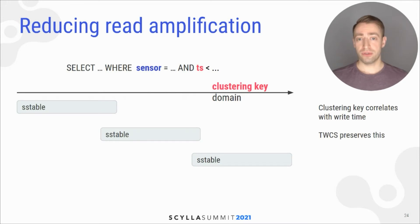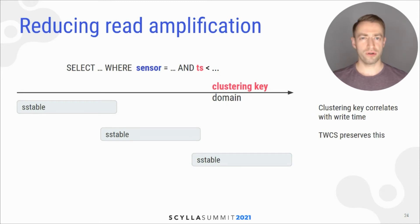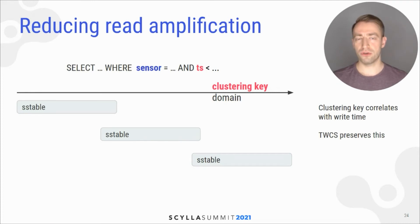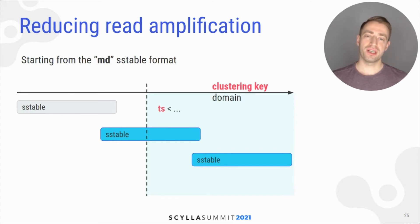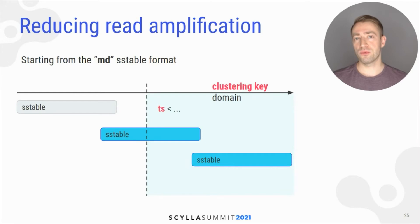But there is another property of time series we can use: the clustering key value is correlated with the write time because it's a timestamp. So SS tables will typically not overlap in the clustering key domain. The MC SS table format annotates SS tables with clustering key ranges, which allows us to select only SS tables which overlap with the clustering key restrictions of the query.